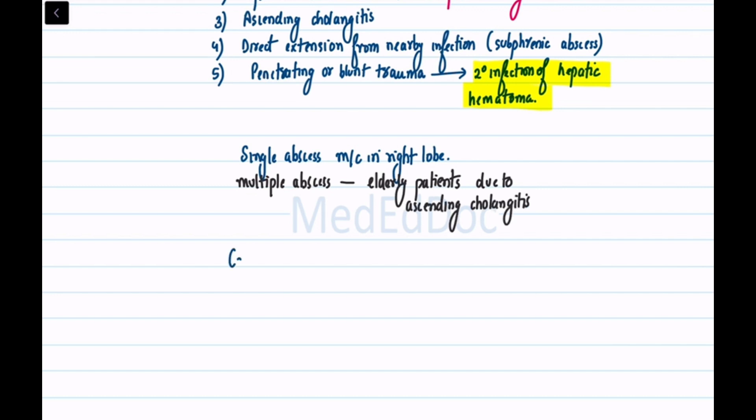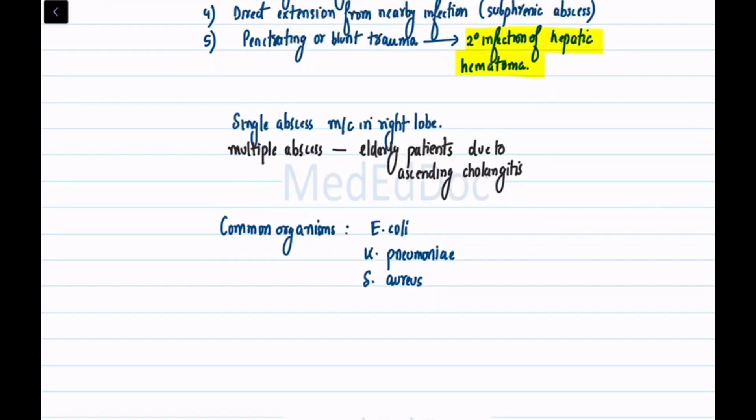Common organisms are Escherichia coli, Klebsiella pneumoniae, Staphylococcus aureus, anaerobic streptococci, and bacteroids.